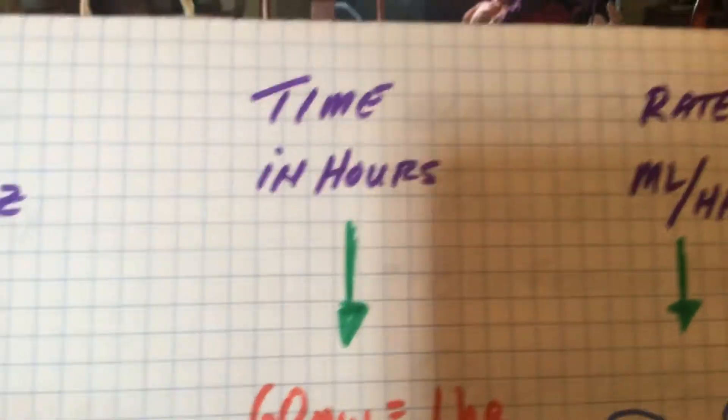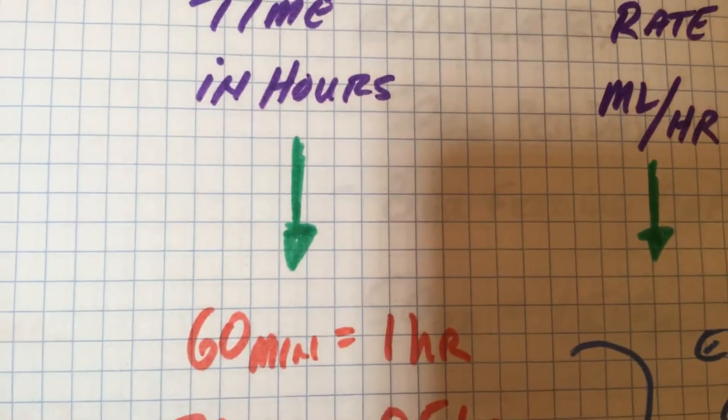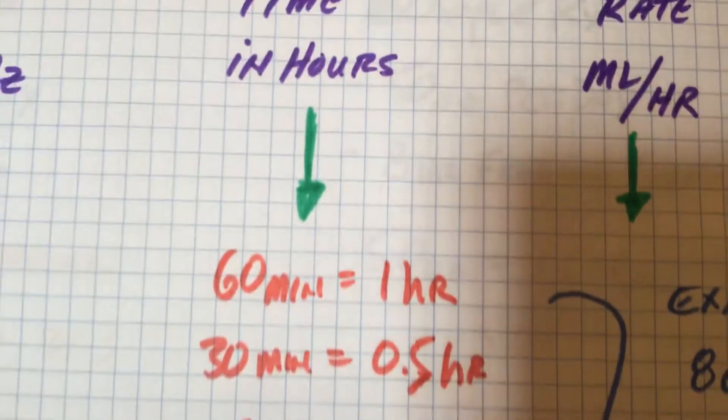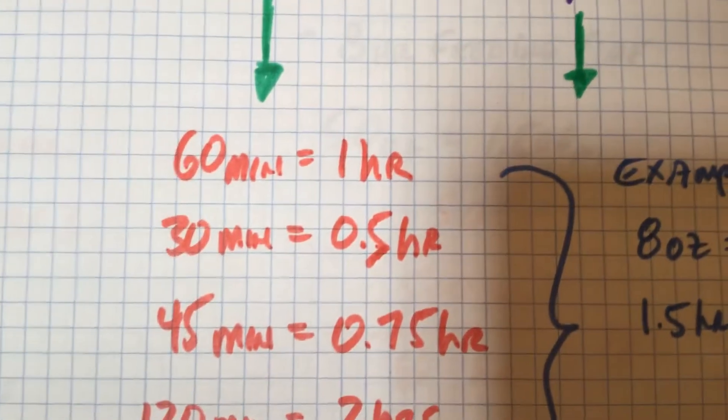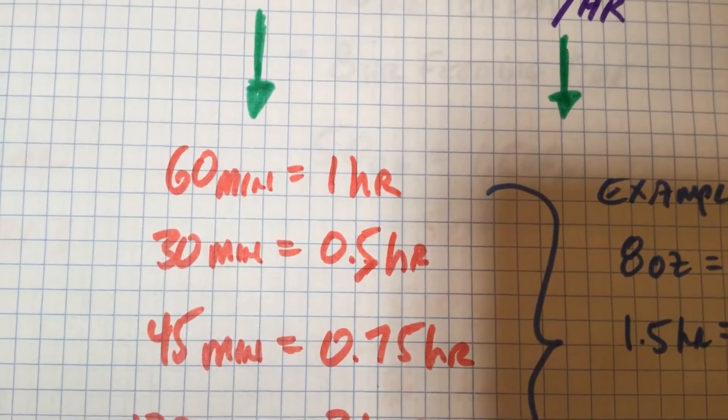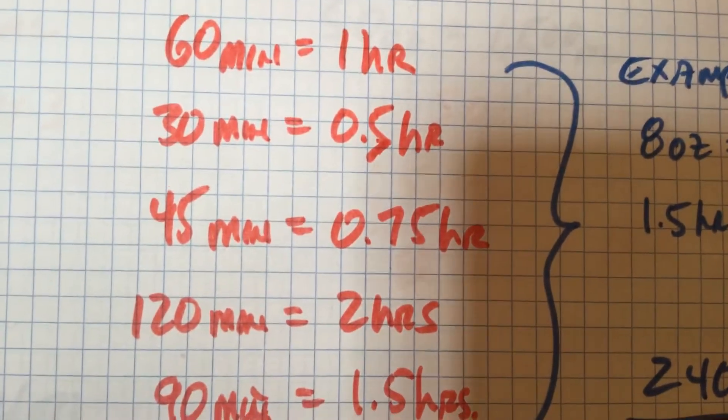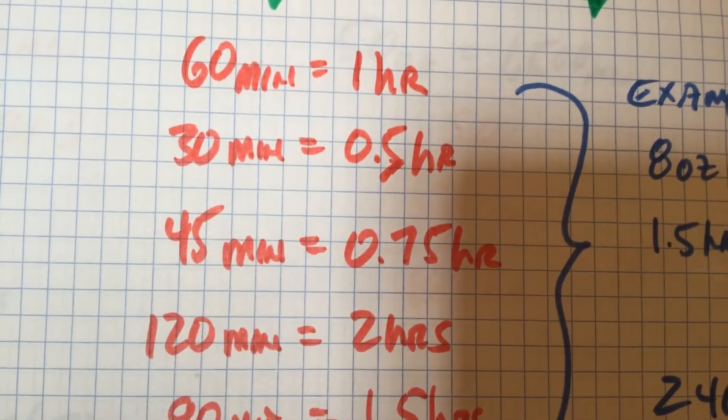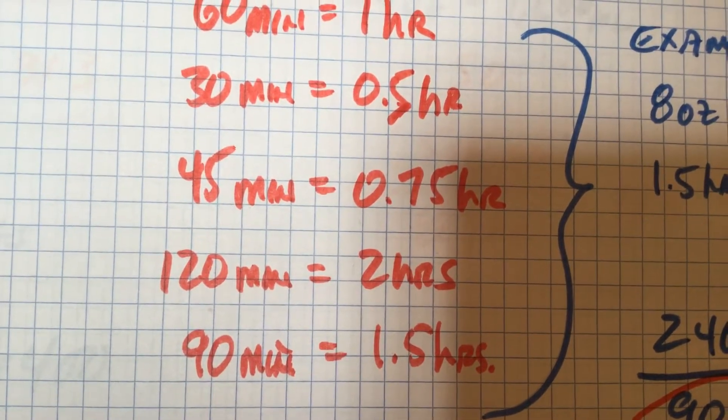Now the unit of time is done in hours, not minutes. So of course, 60 minutes is in one hour. 30 minutes is a half an hour, 0.5. 45 minutes is 3 quarters of an hour or 0.75. Two hours or 120 minutes, and then 90 minutes is an hour and a half, 1.5.